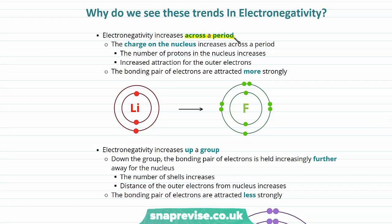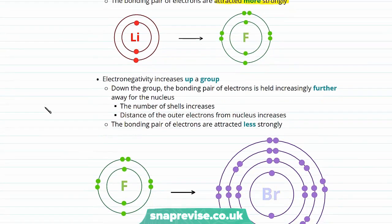Electronegativity increases across a period because the charge on the nucleus increases. As we move across the period, the number of protons in the nucleus increases, and therefore there's an increased attraction for the outer electrons. The bonding pair of electrons are attracted more strongly, so moving from lithium to fluorine we see an increase in electronegativity.